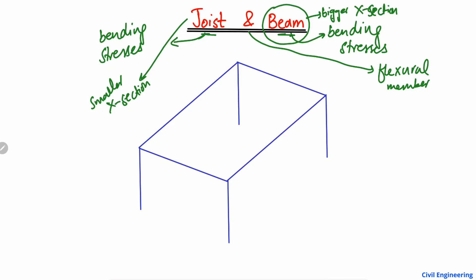Let me take this slab as an example. We see here a slab, and here we see four columns are provided in order to take the load from the slab and to transfer it to the foundation. The joists are provided along the length of the slab.